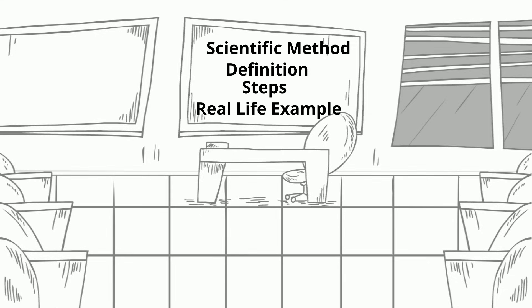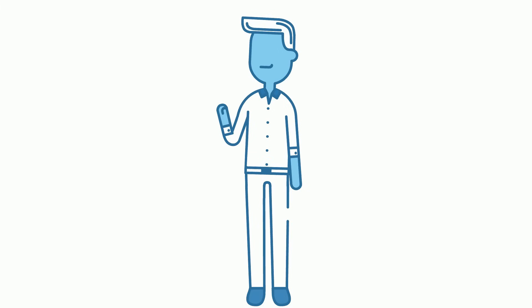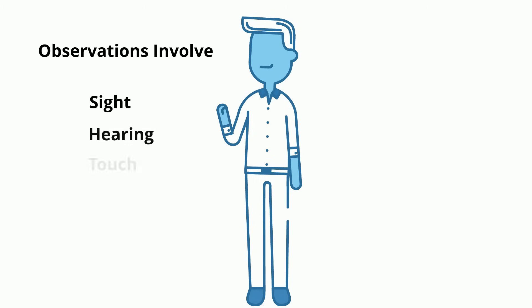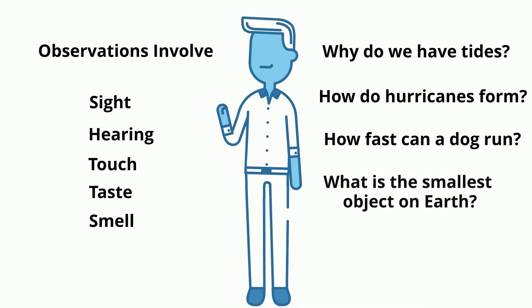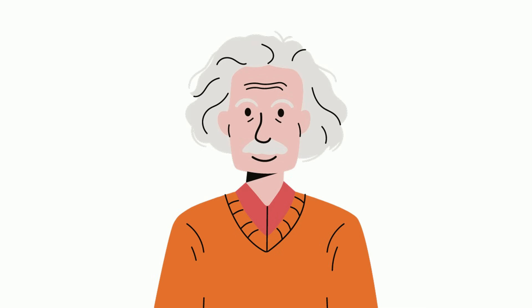The scientific method is a process of experimentation that is used to explore observations and answer questions. It is a very helpful process that can help us find practical solutions to everyday problems, or help scientists ensure that the conclusions they draw are accurate and not based on false assumptions.